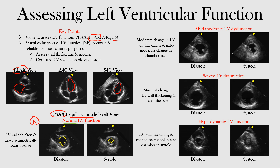Now let's look at mild to moderate LV dysfunction. Again we're comparing diastole and systole. Here there is a moderate change in LV wall thickening and a mild to moderate change in chamber size. Notice that in the parasternal short axis view at the papillary muscle level, the chamber does collapse a little bit in systole, but not as much as in the normal example. This is mild to moderate LV dysfunction — it requires practice to eyeball correctly.